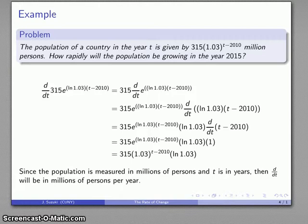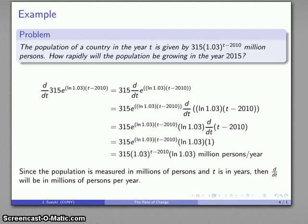We're looking for the units. Our population is measured in millions of persons and t is measured in years. So the derivative, the rate of change of population with respect to time, must have units of millions of persons per year. We can fill in that unit.